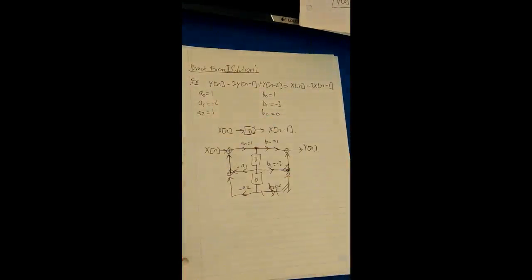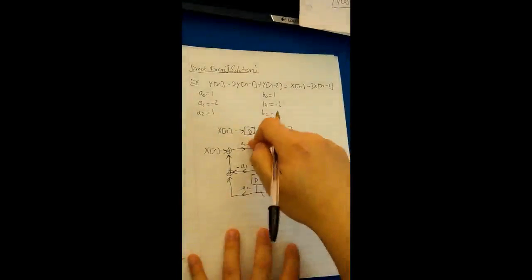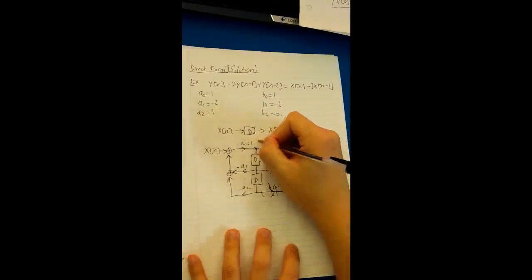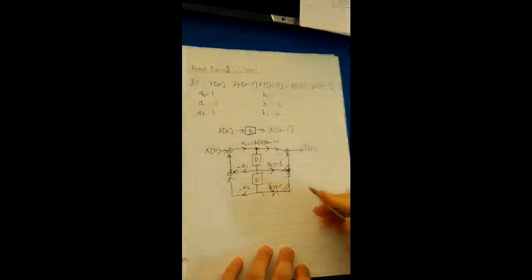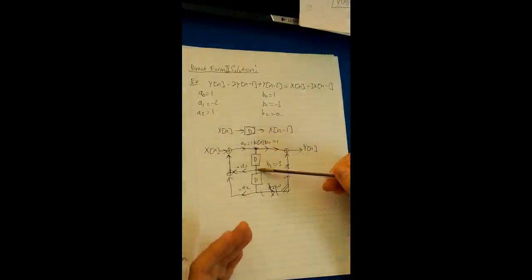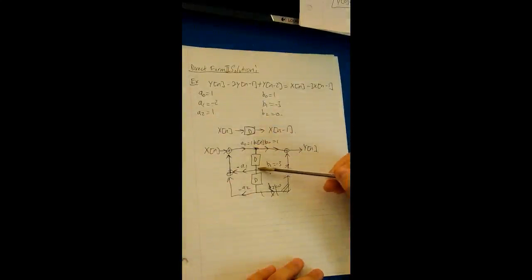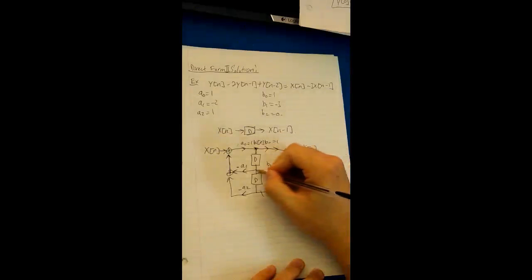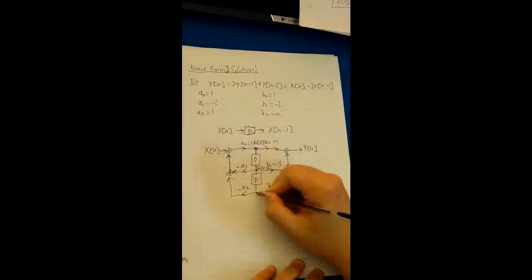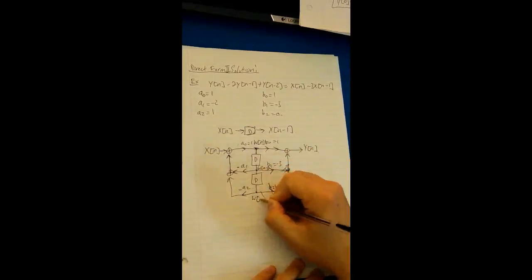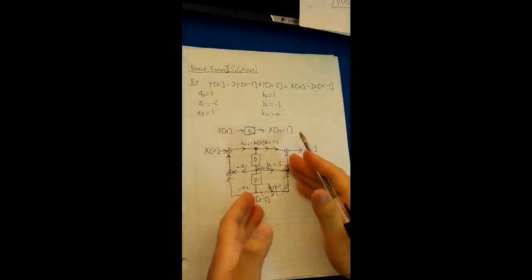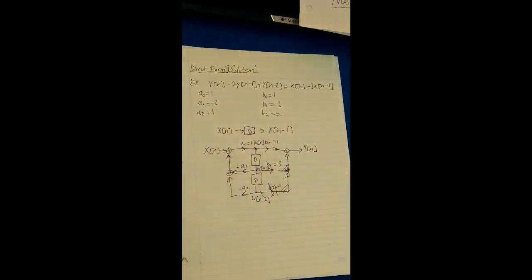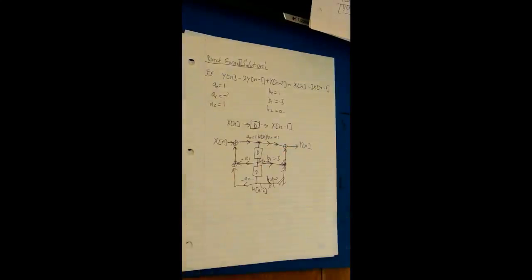In the middle, we can note what is at this common node. We're going to name it something arbitrary — let's call it W of N. Each time we go down through a delay, we get W(N-1) and then W(N-2). So this node here is W of N minus 1, and this one here is W of N minus 2. From this diagram, we can make a direct form solution.